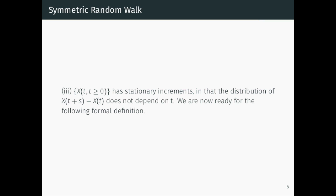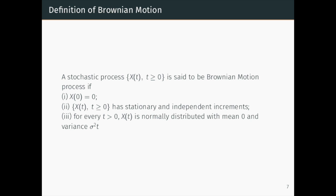Thus, we are now ready for the formal definition of Brownian motion. The stochastic process X(t) is said to be a Brownian motion process if first X(0) is 0, second X(t) for t greater than or equal to 0 has stationary and independent increments, and third, for every t greater than 0, X(t) is normally distributed with mean 0 and variance t sigma square.